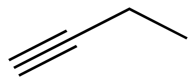1-butyne, also known as ethylacetylene, but-1-yne, ethylethine, and UN2452, is an extremely flammable and reactive alkyne with chemical formula C4H6 and CAS number 107-00-6 that is used in the synthesis of organic compounds. It occurs as a colorless gas.